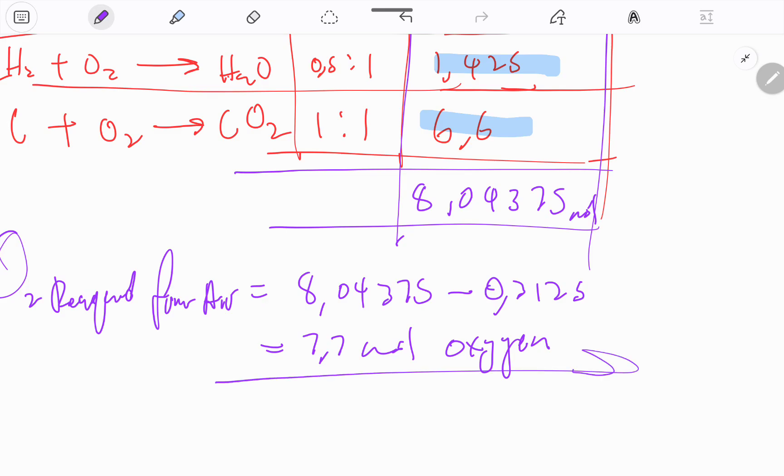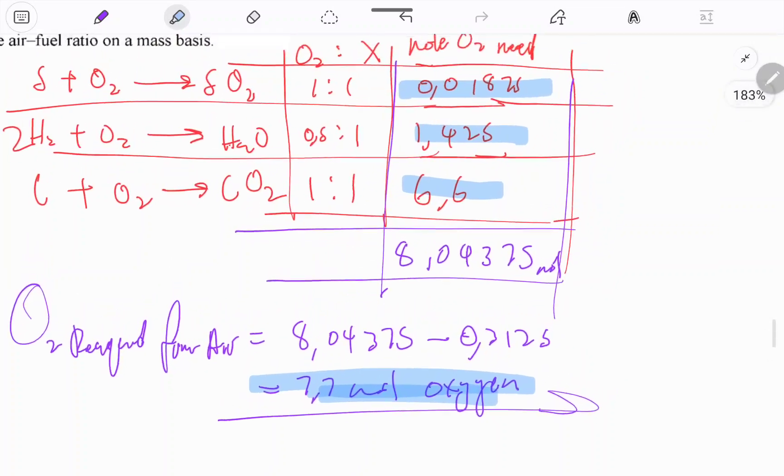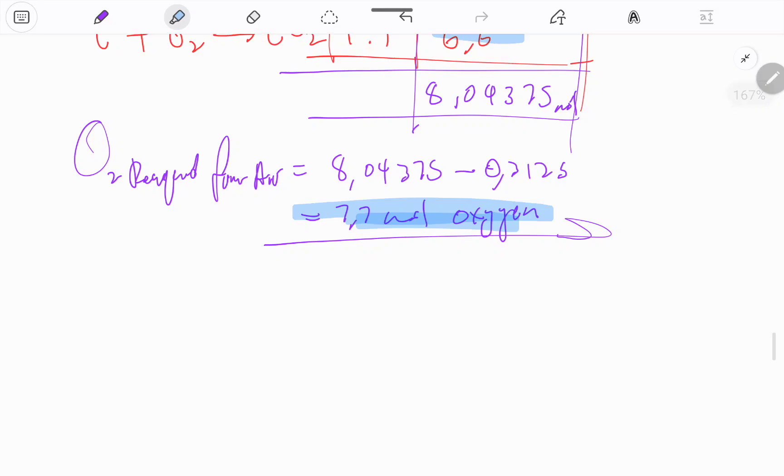Oxygen that is required from the air will be the required 8.04 minus the oxygen we're already getting from the coal itself, which is 0.3125. So literally we just need 7.7 moles of oxygen.